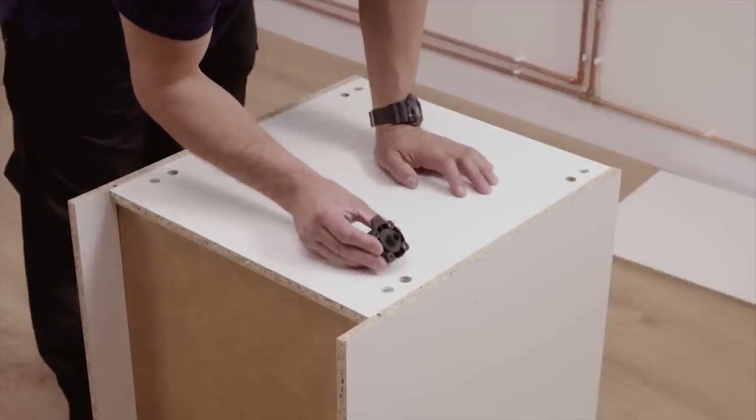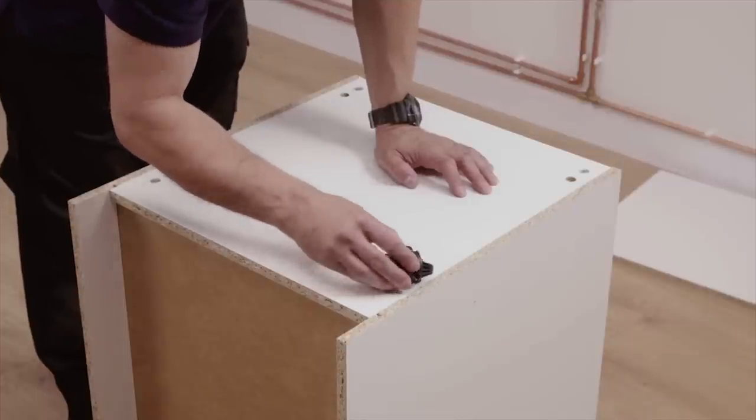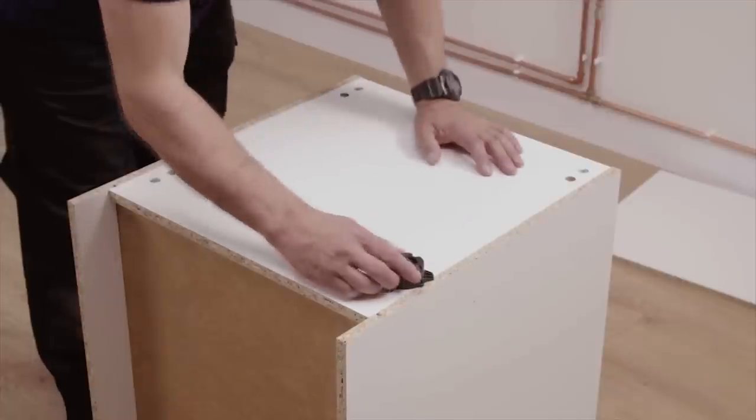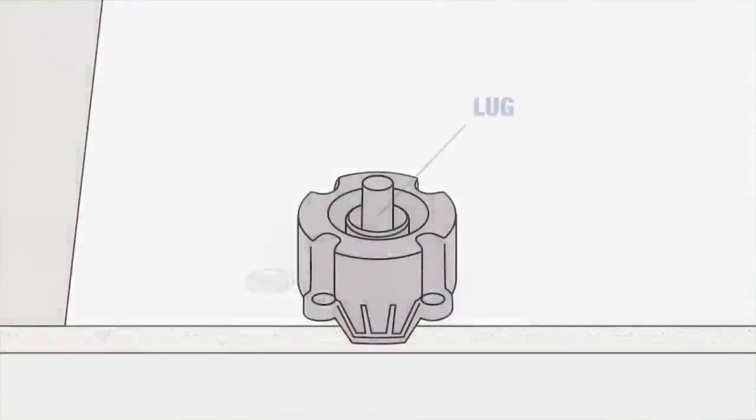Then, place the four leg sleeves into the bottom of the base panel. Make sure that one of the small overhangs on each sleeve is supporting the side panel. Then, gently tap in the lugs. Then, secure with screws.